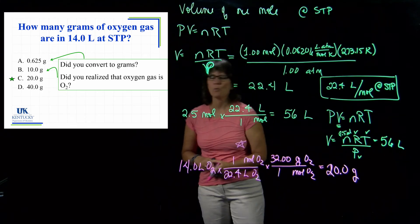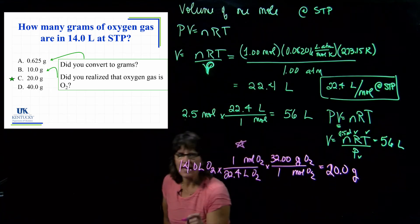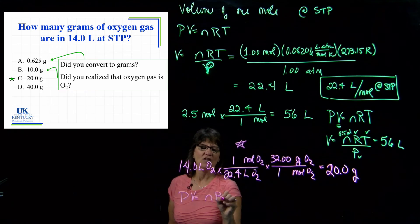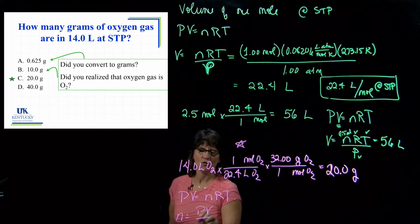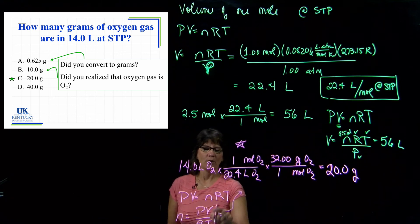There is using this as a conversion factor with dimensional analysis. But would you have to do that? No, you could have chosen instead to do PV equals nRT and solve for N. So N equals PV over RT, and you can start plugging things in.